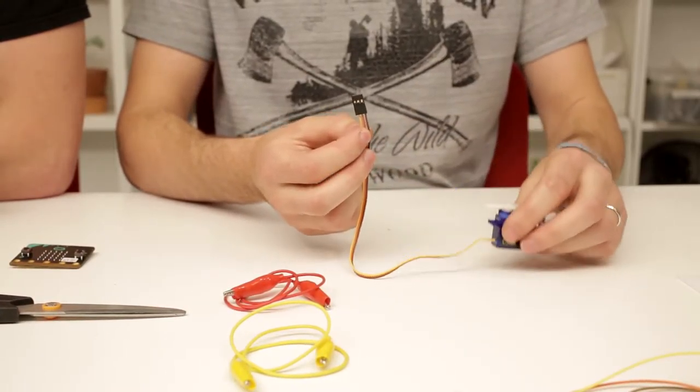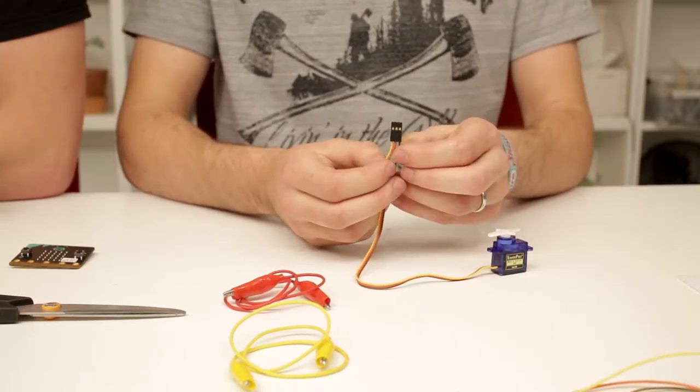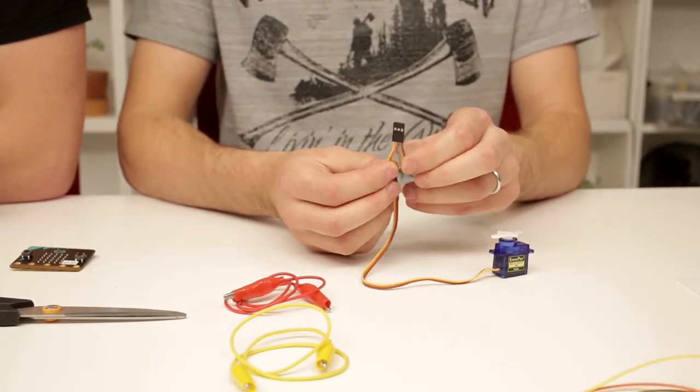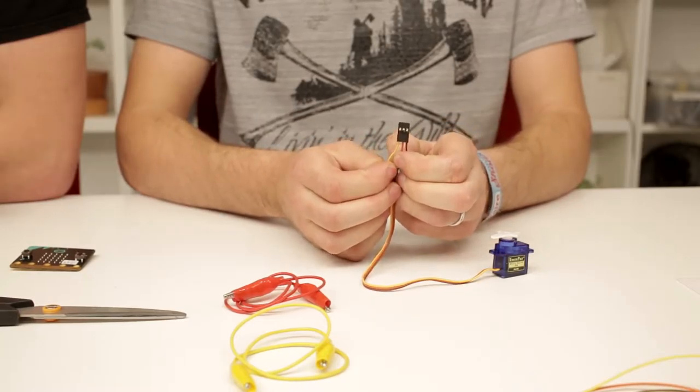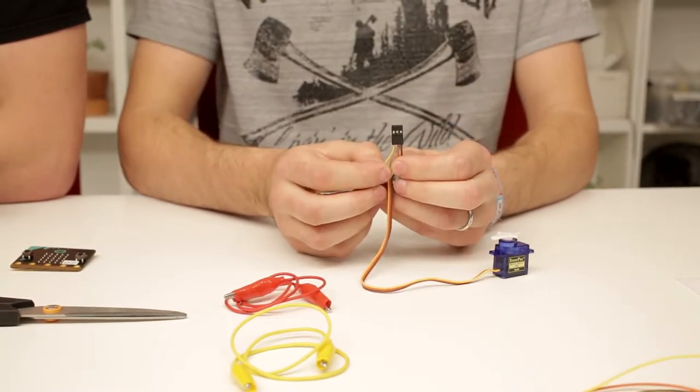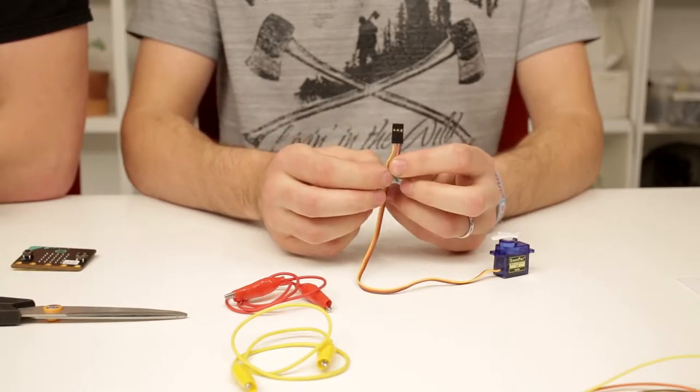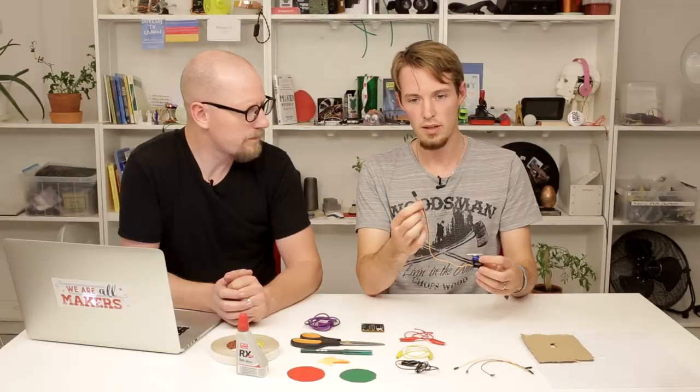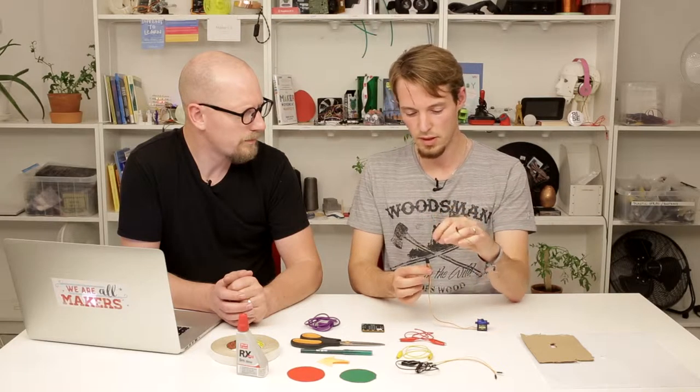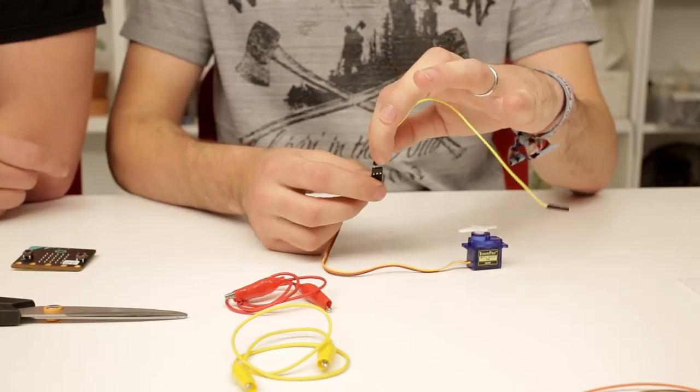These colors can be different depending on which servo you have, but the brown one is for ground, the orange one is for power, and the yellow one is for signal. The signal determines at which angle the servo is going to be. To connect this to the micro:bit we need some cables. We have these prototyping cables because they fit nicely into the servo motor's connector.